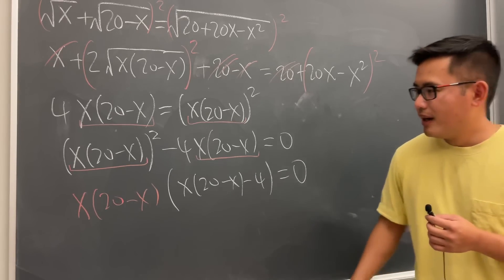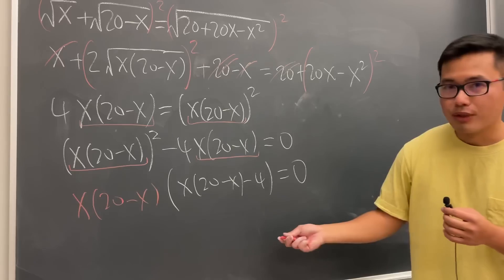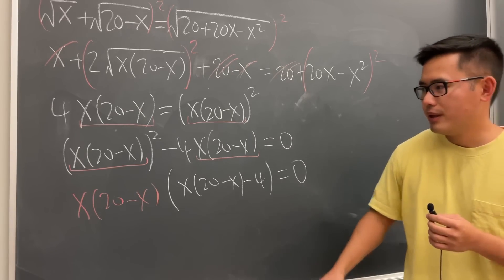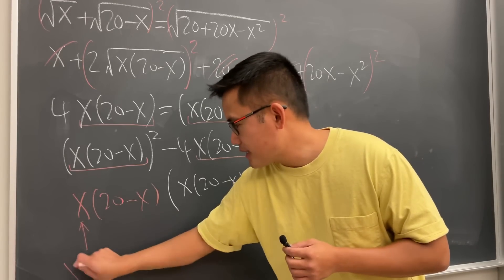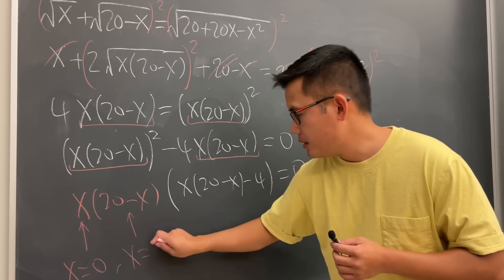x times 20 minus x, and then this inside is still left. So x times 20 minus x, and then this right here, we just have the minus 4. And all in all, this is equal to 0. Much better this way. So now from here, we can see that because we have everybody's multiplying, it's equal to 0. So from here, we know x has to be 0. And from here, we know x has to be 20.